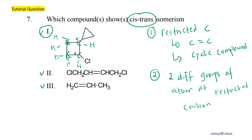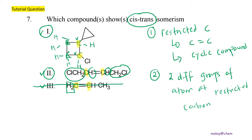For option two, both restricted carbons have one hydrogen and one CH₂Cl group, so option two also can show cis-trans isomerism. For option three, the restricted carbon on the left-hand side has two hydrogens, which are the same group, so option three is not the answer. Only options one and two are correct, so the final answer is B.